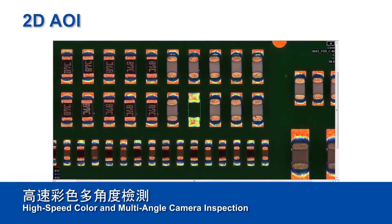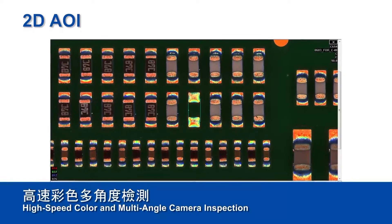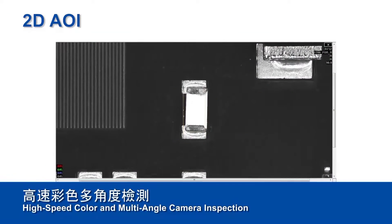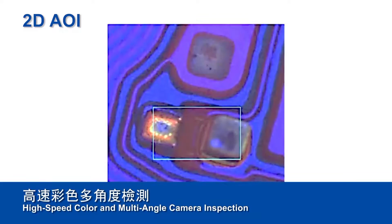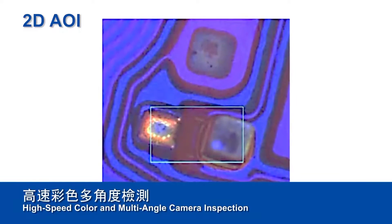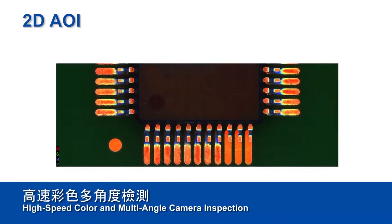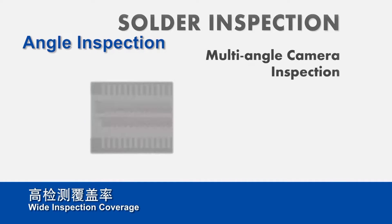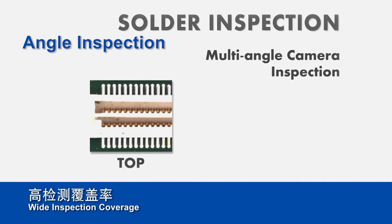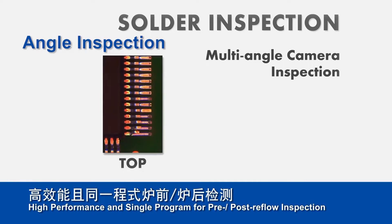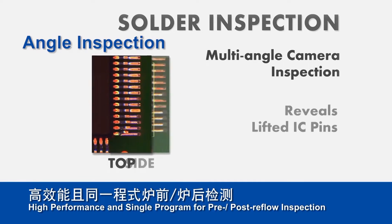2D AOI can identify missing or wrong parts, polarity, placement errors, and open shorts on the PCB. Blind spots and dead angles can be easily inspected using side-view camera AOI systems.